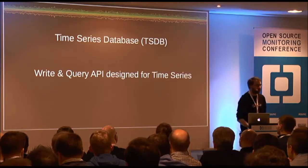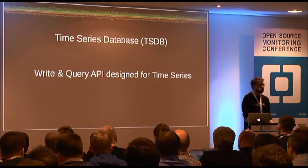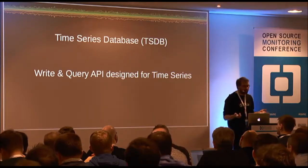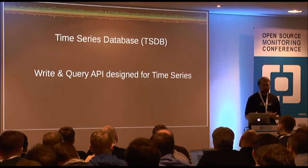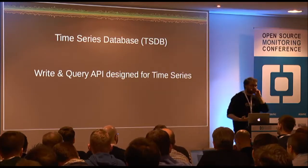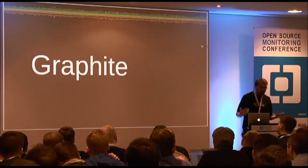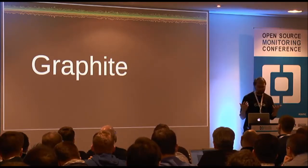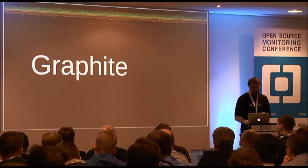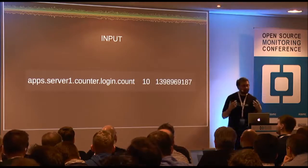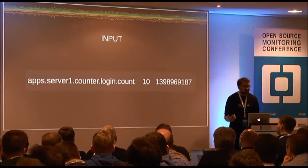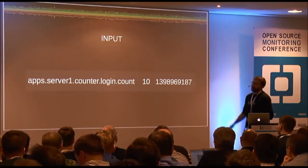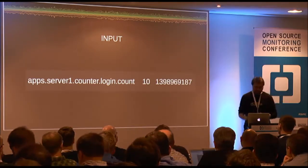One great tool for gaining observability is time series databases — purpose-built systems for measuring things with a purpose-built write and query API. A great example is Graphite, which has an extremely simple write API: you send it a metric key, a value, and a timestamp as a plain string over TCP or UDP. This simplicity enabled a huge ecosystem of tools that write metrics to Graphite-compatible servers.